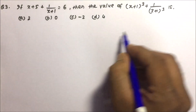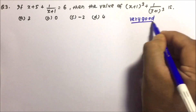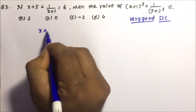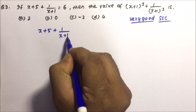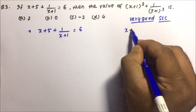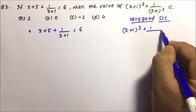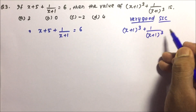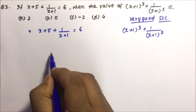Moving towards question number 3, which is a very good question and has already been asked in the SSC examination. The problem is: x plus 5 plus 1 divided by (x plus 1) equals 6, and we need to calculate (x plus 1)³ plus 1 by (x plus 1)³.